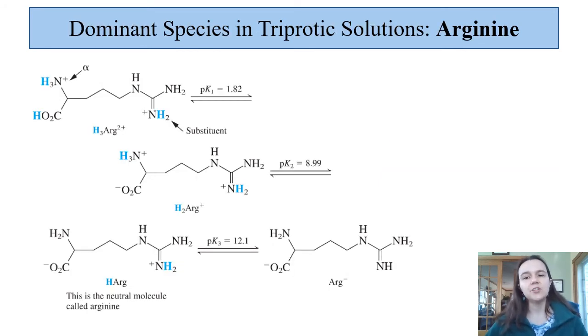Dominant species identification in triprotic solutions. Here the example is arginine. Arginine is one of our lovely molecules. The neutral molecule is actually zwitterionic, so it has a negative charge and a positive charge right here.